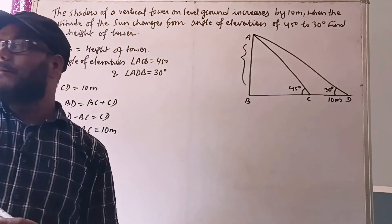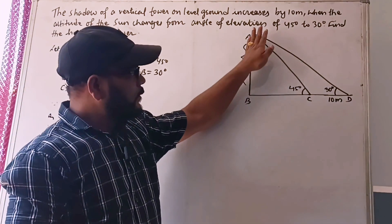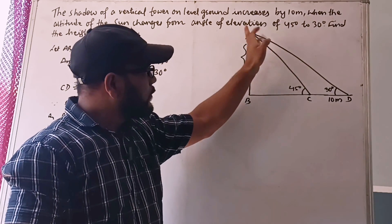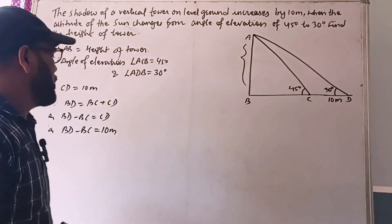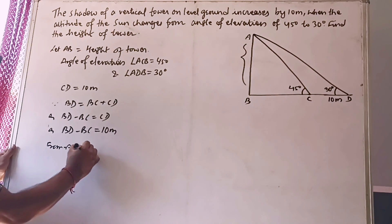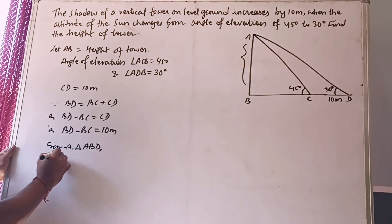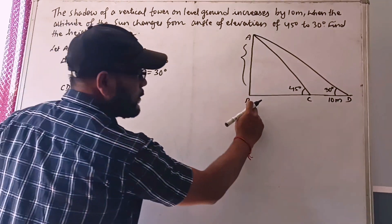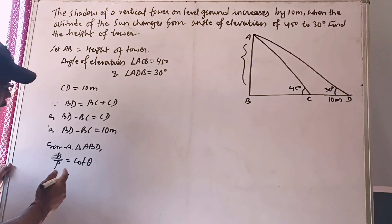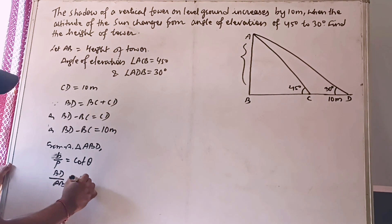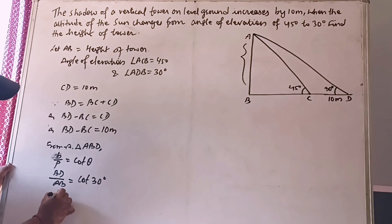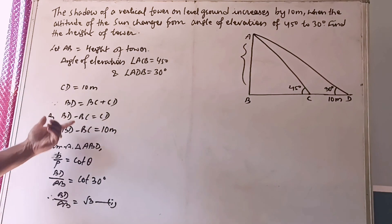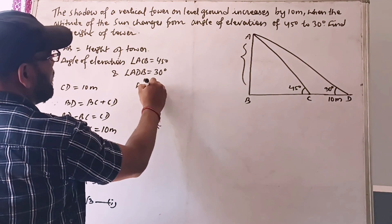Now focus on the outer triangle ABD. From right angle triangle ABD, using cot theta equals base divided by perpendicular: BD by AB equals cot 30 degrees, which equals root 3. So this is the first relation.